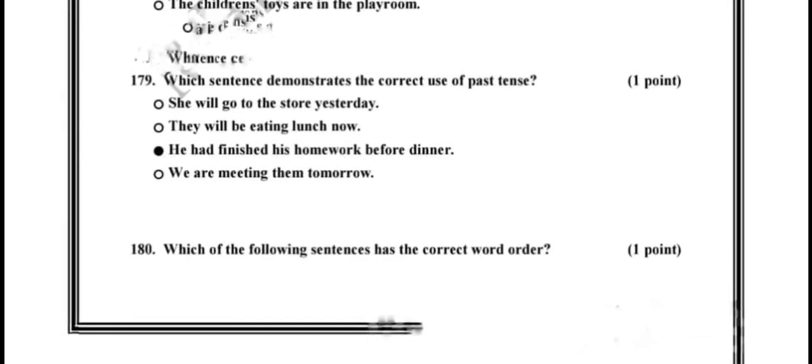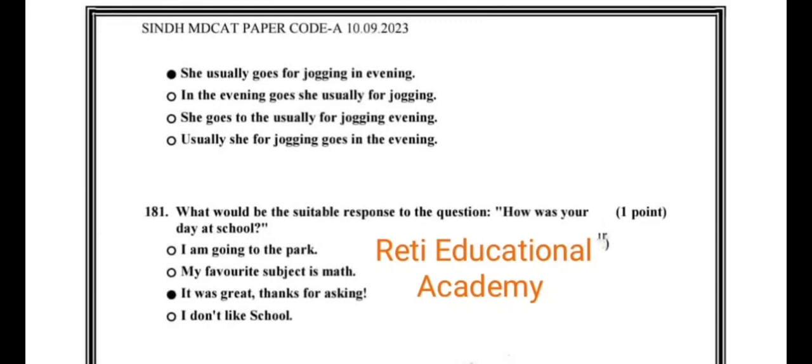Question number 180. Which of the following sentence has the correct word order? And the correct option is she usually goes for jogging in the evening. Question number 181. What would be the suitable response to the question, how was your day at school? And the correct option is it was great, thanks for asking.